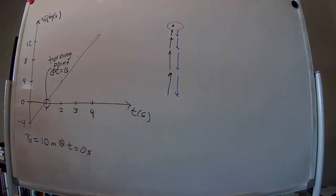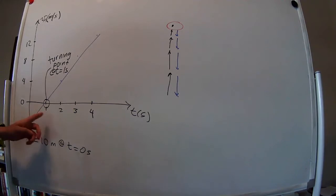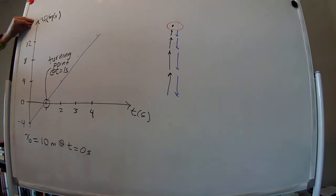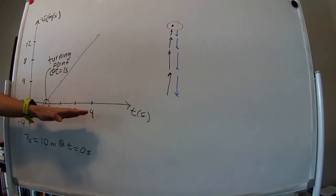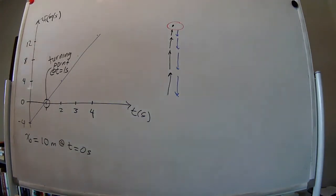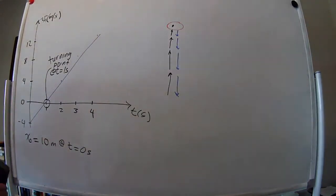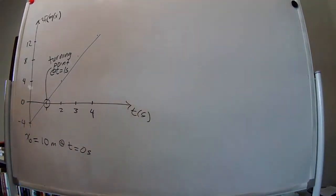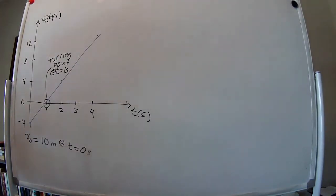The second question is a little more interesting. What is the object's position at 2 seconds and at 4 seconds? This is a velocity versus time plot — it does not give you the position directly, but we need to calculate it. We'll use calculus first, then look at a geometric method.